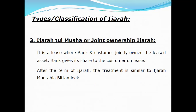The third and last type is Ijara and joint ownership — also called diminishing Ijara. This is basically joint ownership between the bank, the financial institution, and the customer. It is a lease where the bank and the customer jointly own the leased asset. If the customer promises to purchase at the end, it falls in the second type; if not, it falls in the first type.